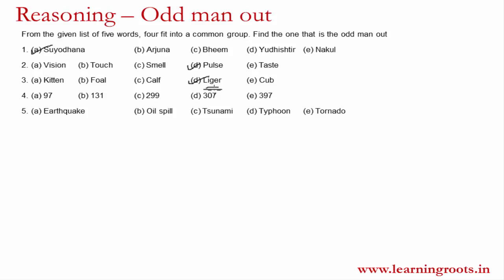By now you would have got a gist of how odd man out works. I will solve the fourth one; the fifth one you can solve for yourself. The fourth one is a bit interesting: 97, 131, 299, 307 and 397. At cursory glance, 97 is a prime number — the first thing that should come to your mind. There is no other major property associated with 97; it is not divisible by anything but 1 and 97.